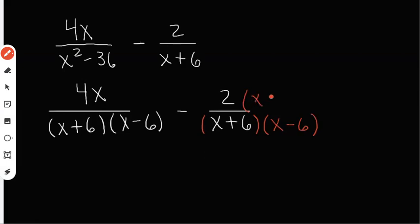So when I do that, the top and the bottom are going to change. The first fraction, I'm going to keep the same because it already has the least common denominator at the bottom, x plus 6 and x minus 6.